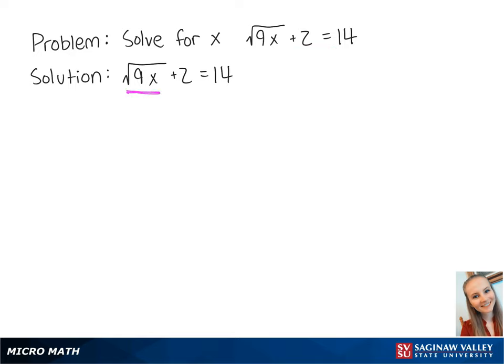We want to put the radical sign on the left side by itself, so we're going to subtract 2 from both sides of the equation, giving us the square root of 9x equals 12.